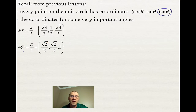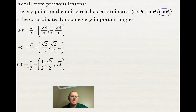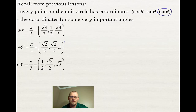For a 45-degree angle, which is pi over 4, our values are root 2 over 2, root 2 over 2, and 1. And for a 60-degree angle, or pi over 3, we have values of one half, root 3 over 2, and root 3.